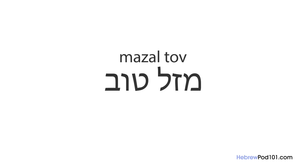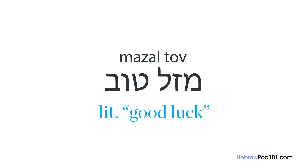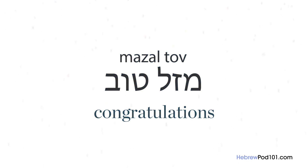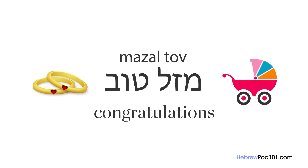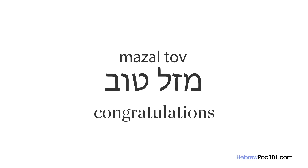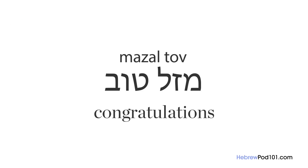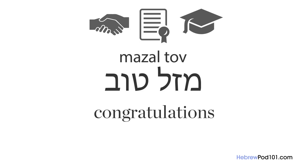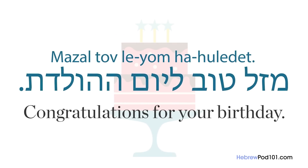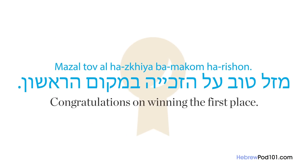The last expression is a famous one you may know from Yiddish, which was adopted into English as well: 'Mazal tov.' It literally means 'good luck' but is used as 'congratulations.' Originally said at weddings and births to declare a good thing had happened, today it's used to wish someone luck in the future. For example: 'Mazal tov leyom ha-huladet' — congratulations on your birthday, or 'Mazal tov al hazkiyah bamakom harishon' — congratulations on winning first place.